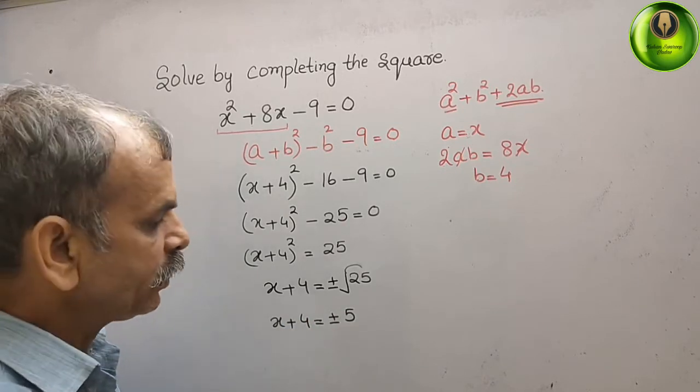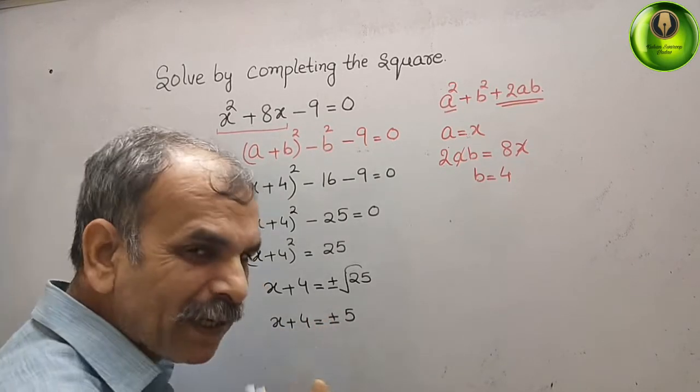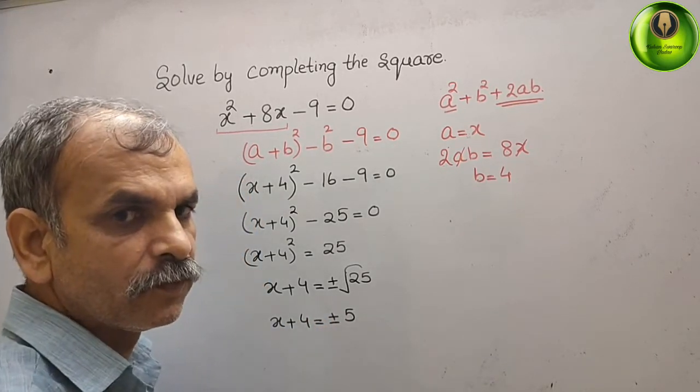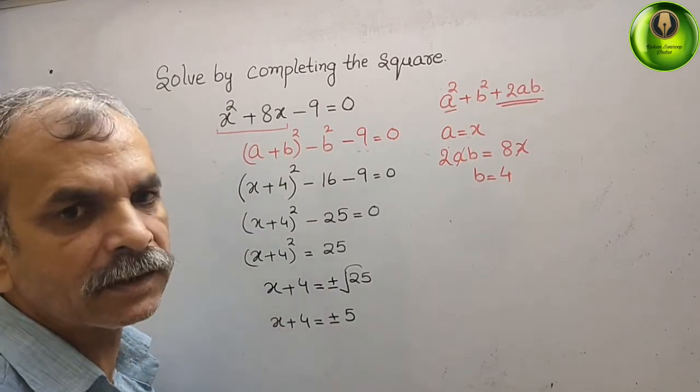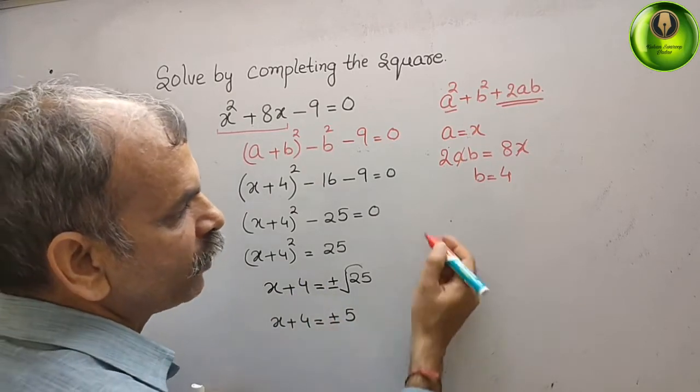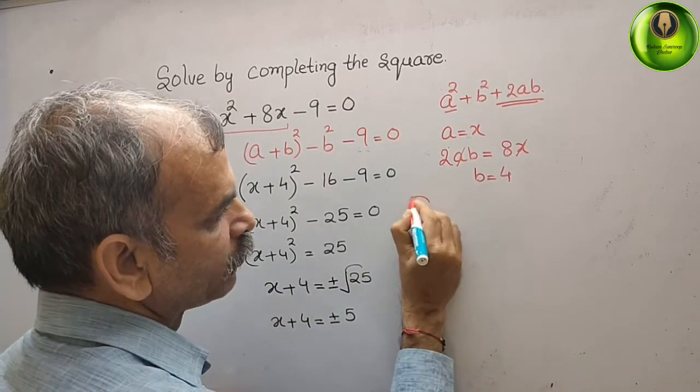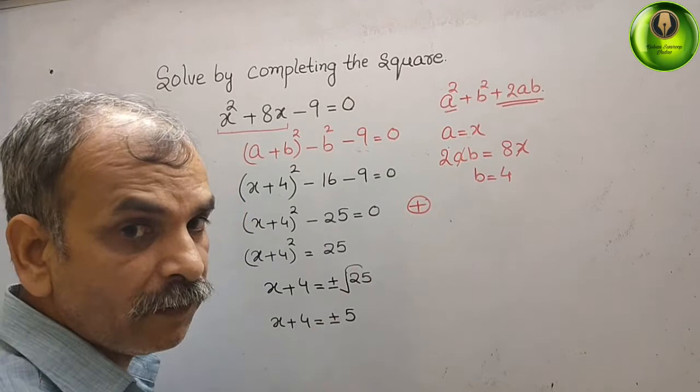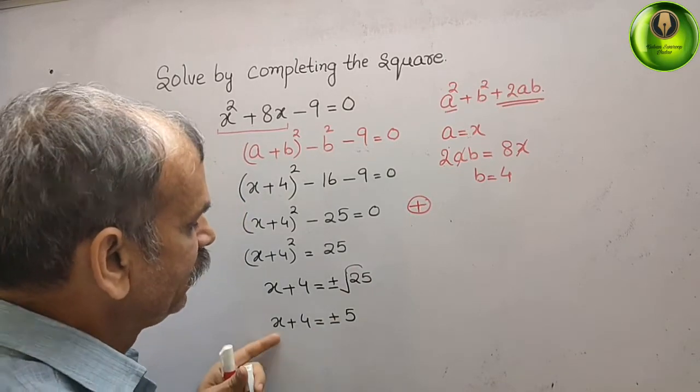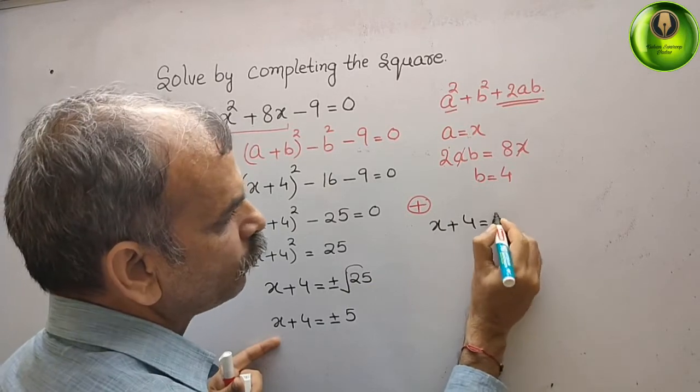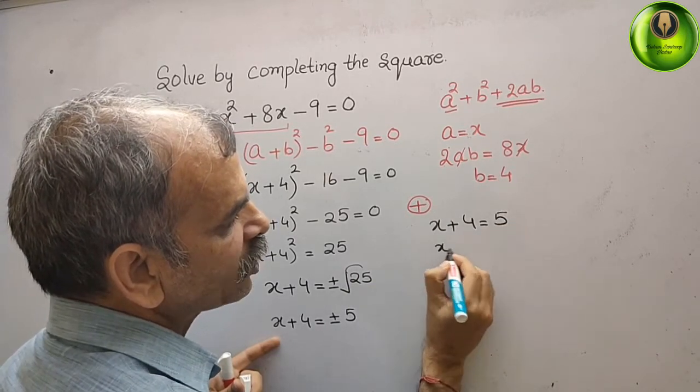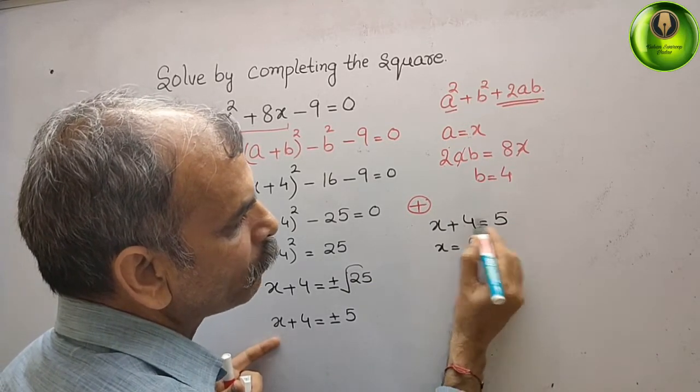Now initially here the signs are plus and minus, so at one case we will take plus, at another case we will take minus. So first we will take our plus. What we will get? We will get x + 4 = 5, x = 5 - 4.